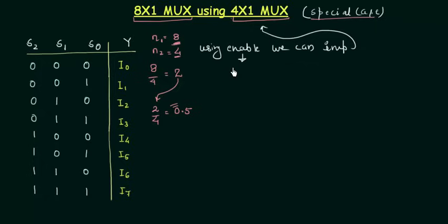But in this, the enable is varying. We will vary the enable to obtain 8x1 MUX. So let's see how we can do it. The most important thing and the most helpful thing in the MUX tree is this table. This table gives you all the ideas to implement the higher order MUX by using the lower order MUX. So let's use this table.